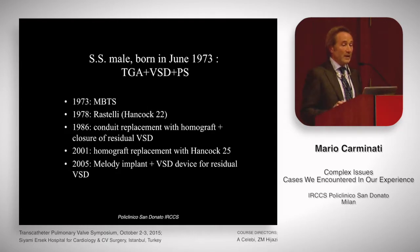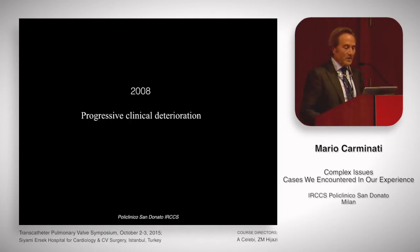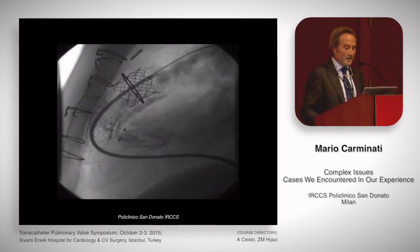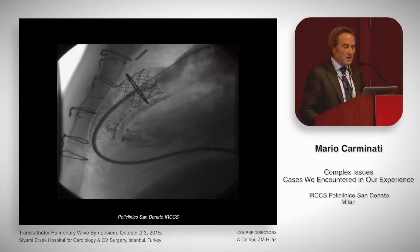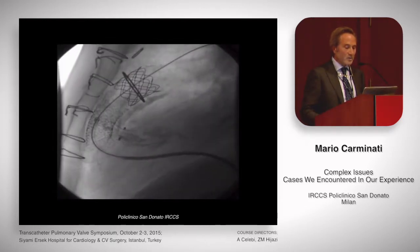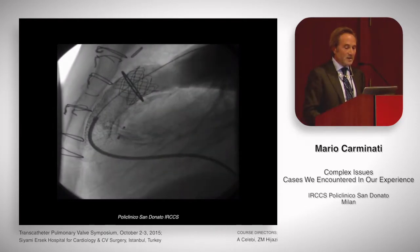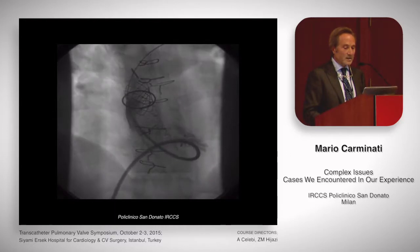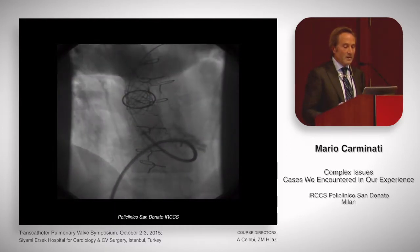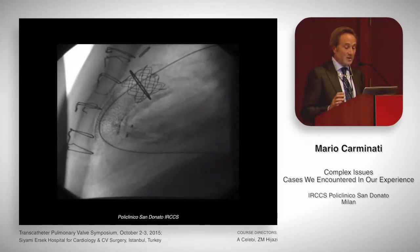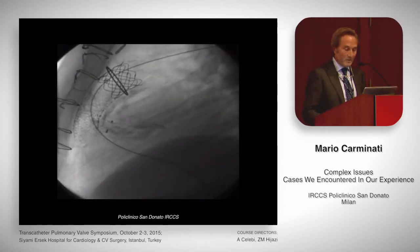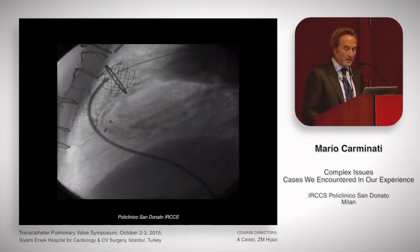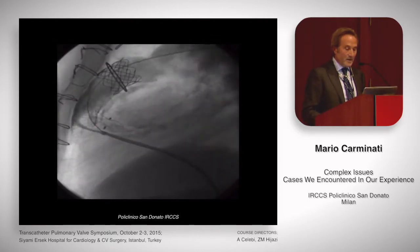This procedure was done in London. In 2008, he experienced progressive clinical deterioration and came to our observation. The catheterization and angiogram verified that the right ventricular pressure was systemic. You may see there is a displaced Melody valve with a severe degree of obstruction, with a long stent in the RV outflow tract and the Melody there.